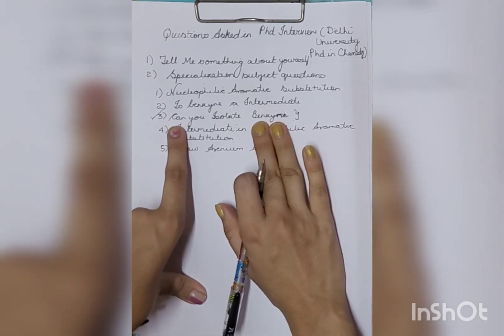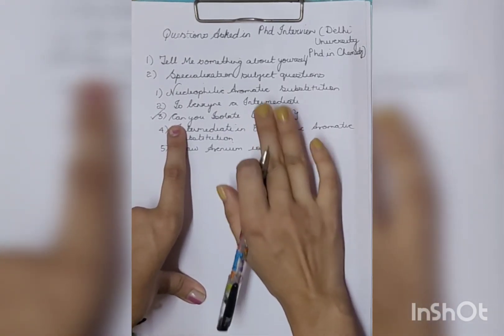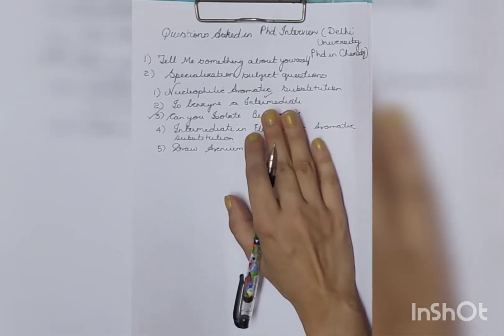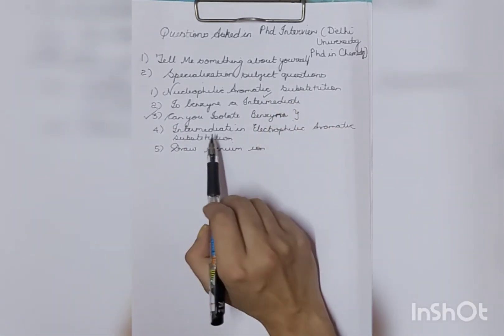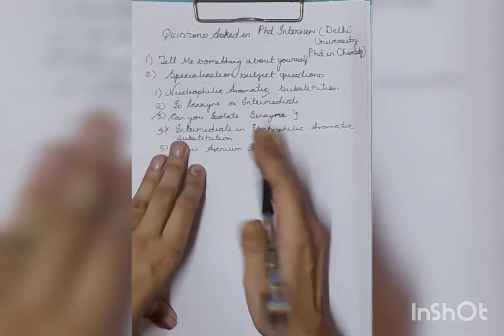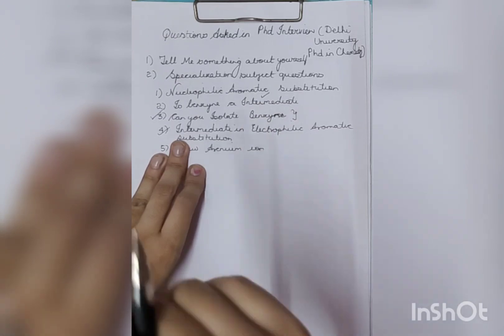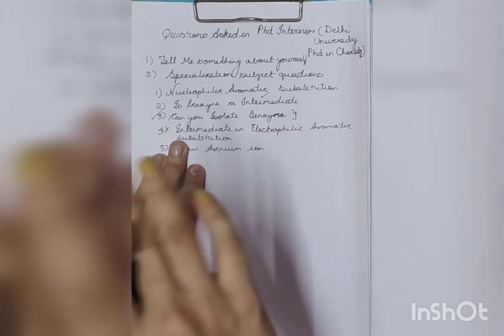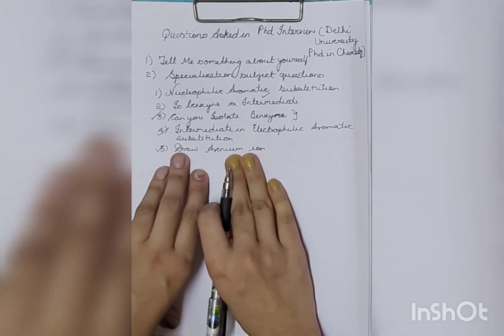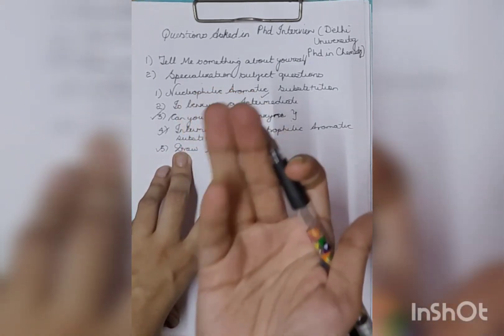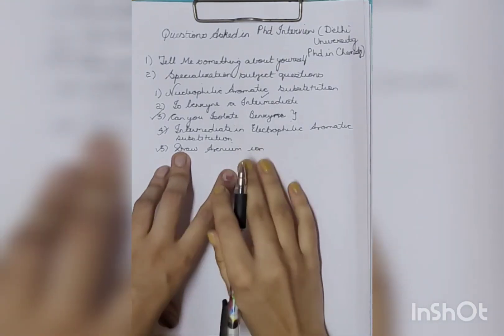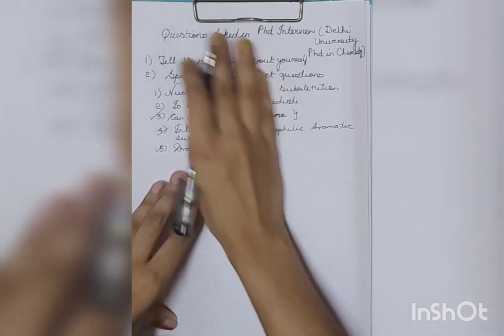Can you isolate benzyne? See, I was not able to remember at that time, although I knew that in Diels-Alder reaction you can do it, but I was not able to remember at that time. This was the question which I did not answer, but I said no sir, I am not able to remember, but I know that it is an intermediate, that's for sure. So they were okay - if you are confident enough they will select you. After that they asked me what is the intermediate in electrophilic aromatic substitution. So obviously first thing which came to my mind is cation. They said okay cation, but can you specifically name it? I said okay arenium ion. Then they asked me to draw arenium ion in nitration or any. I drew it in nitration. They said okay fine, thank you.